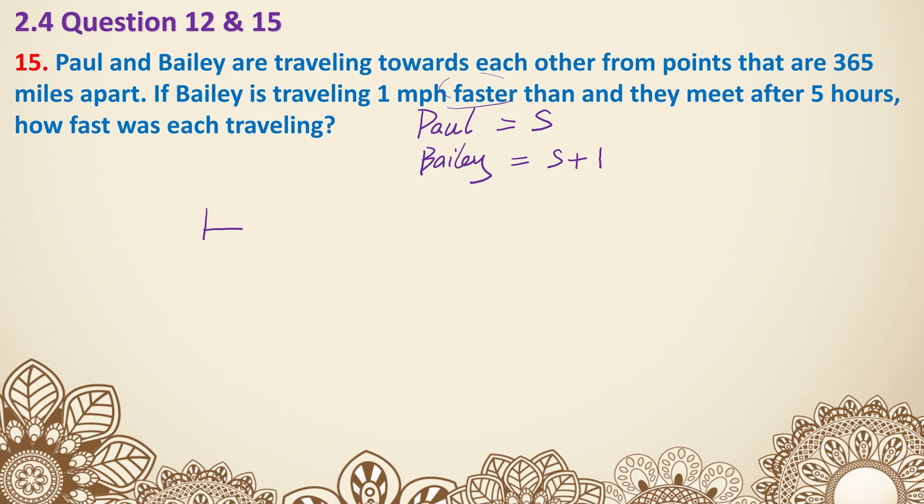So let's set it up. Paul is on the left side, and Bailey is on the right side. Well, Bailey is driving faster, which means Bailey is going to drive a bit more, so it's like a bit towards the left from the midpoint. So for Paul, five hours, and the speed is s. For Bailey, it's also five hours. The speed is s plus one. And altogether, since they were 365 miles apart, that means the distances add up to 365 miles.